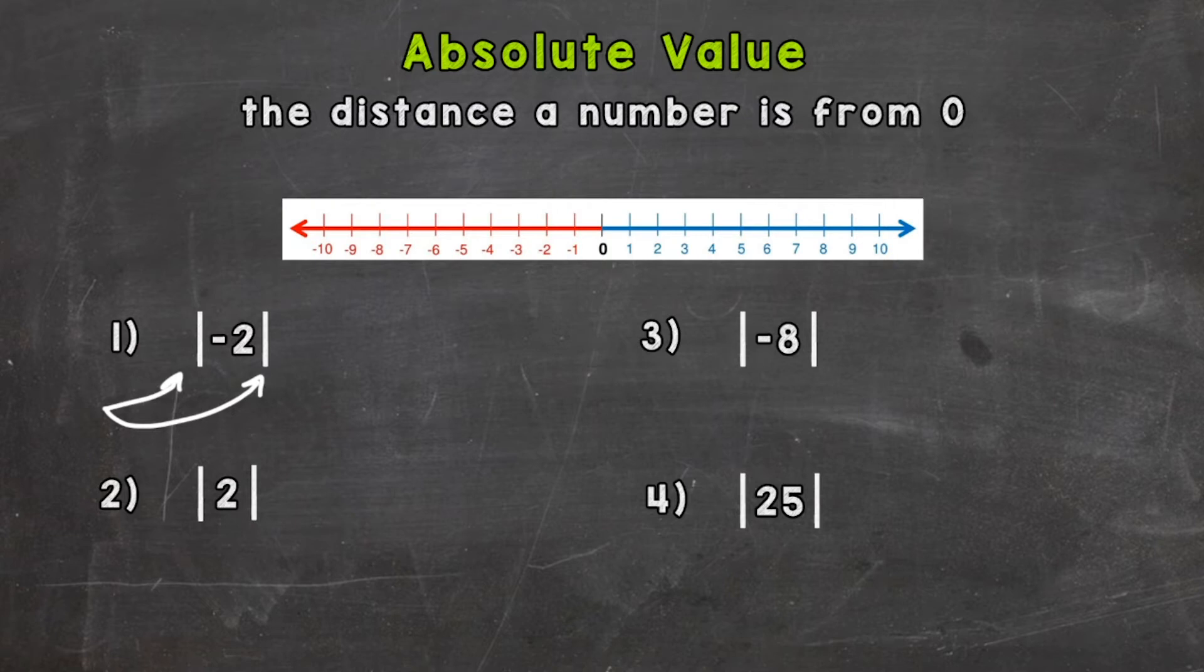So all this is saying is how far is negative two from zero? So let's find negative two on our number line here. And we need to find how far away it is from zero. Well, negative two is one, two away from zero, right? Two jumps away from zero. So the answer actually is a positive two because that's how far away negative two is from zero.